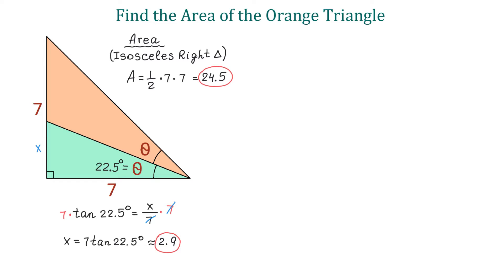Once we know x, let's get the area of the green triangle. The area will be 1/2 times the base 7 times the height 2.9. This equals 10.15.